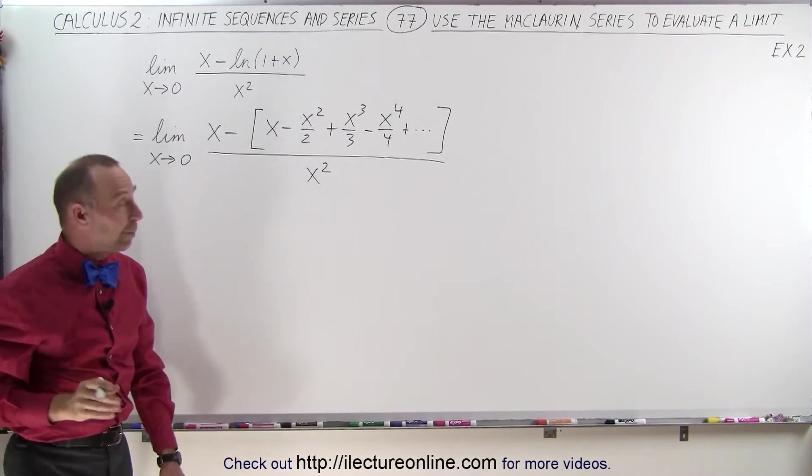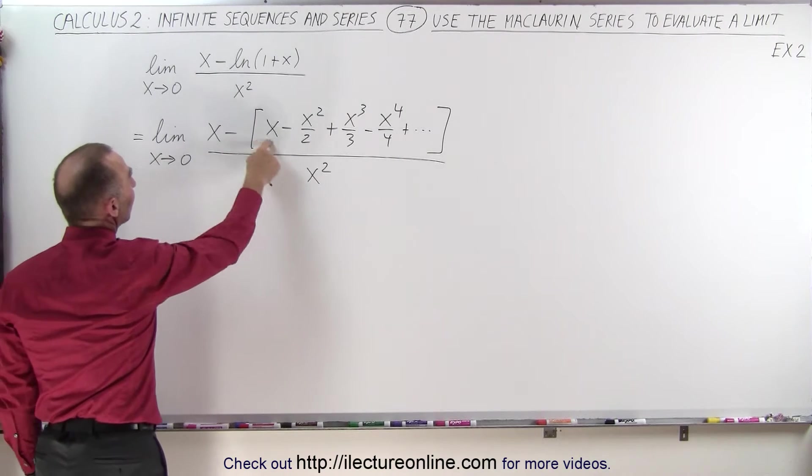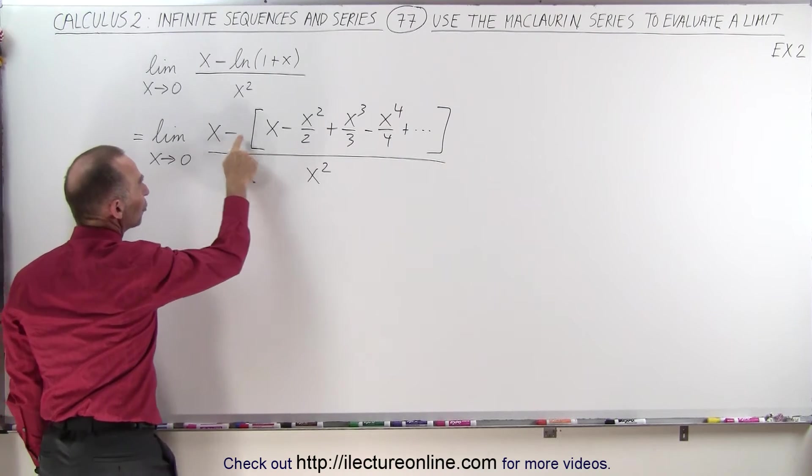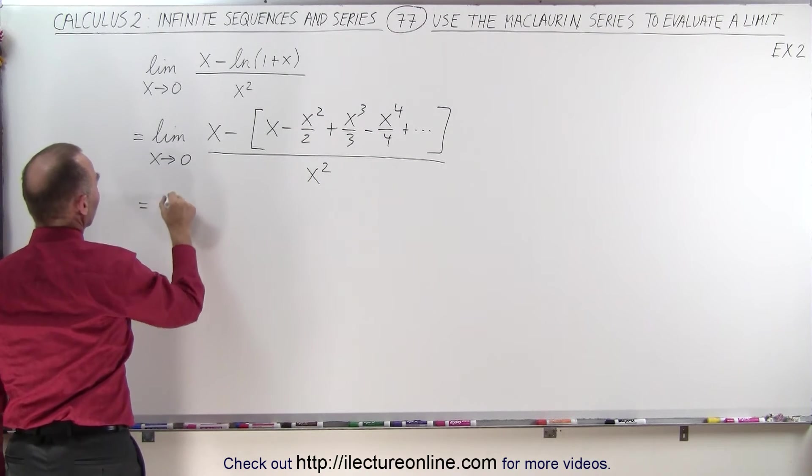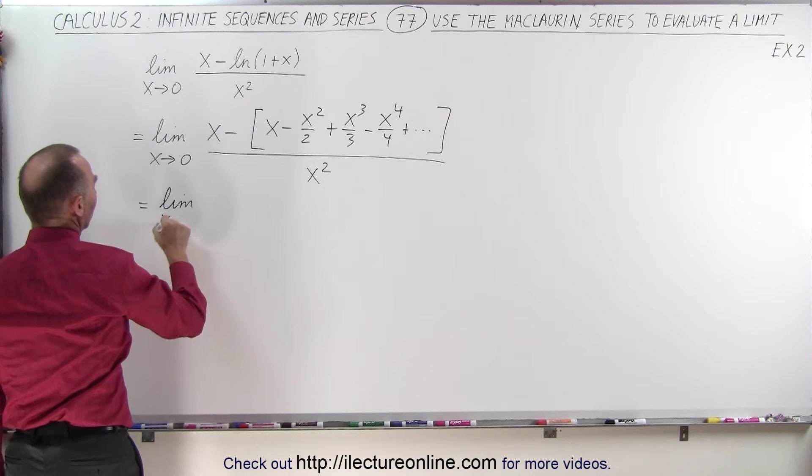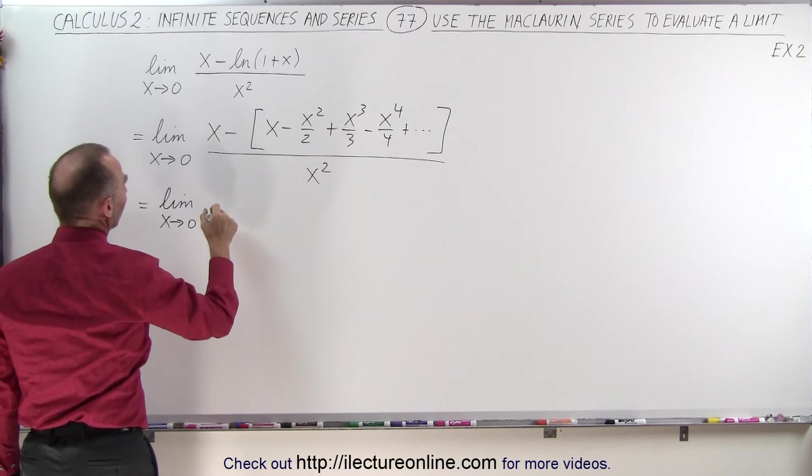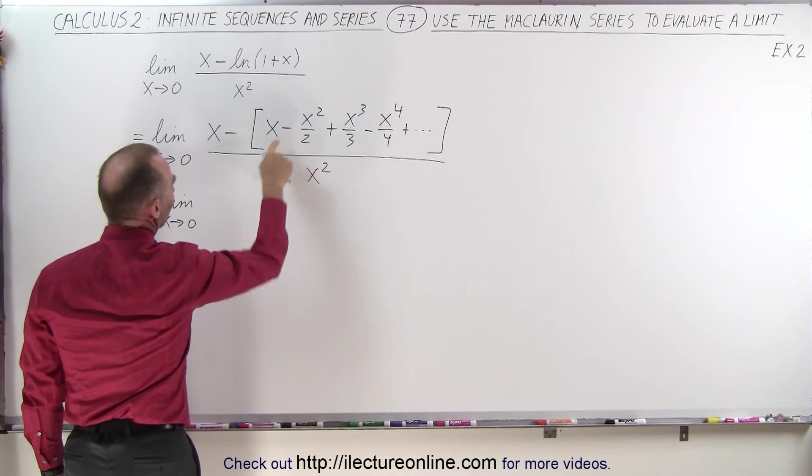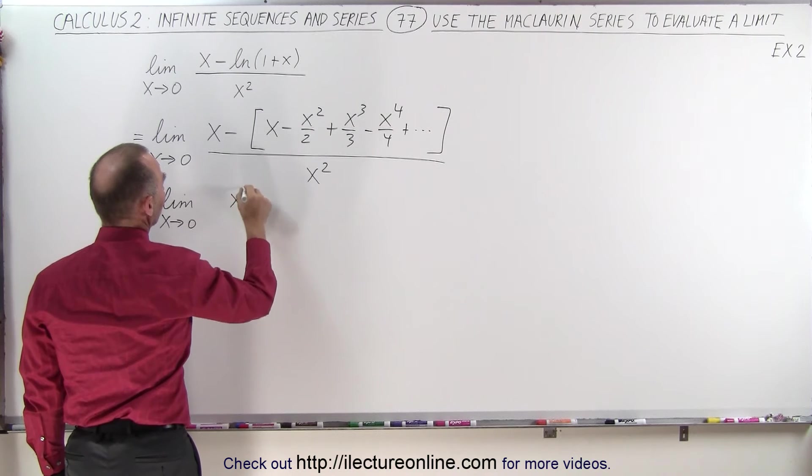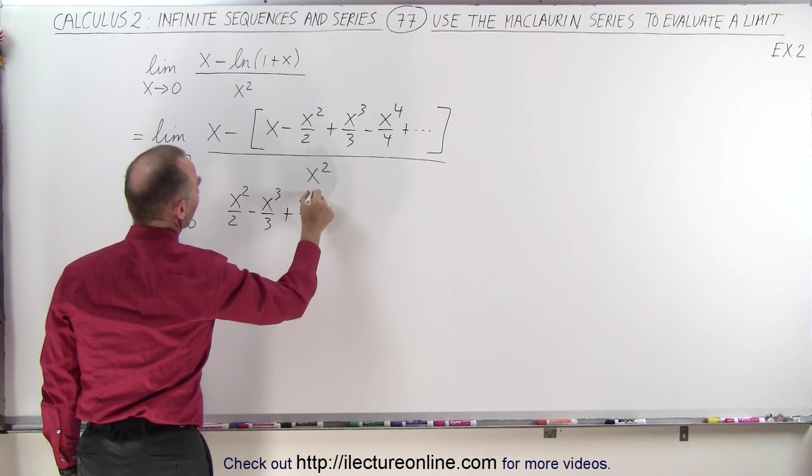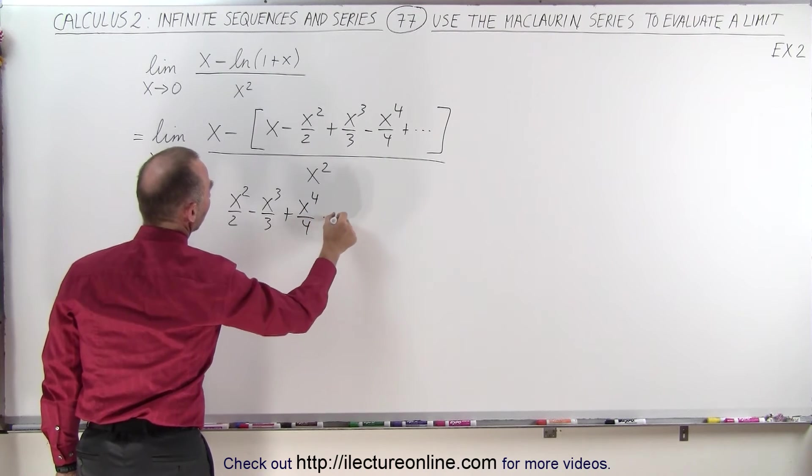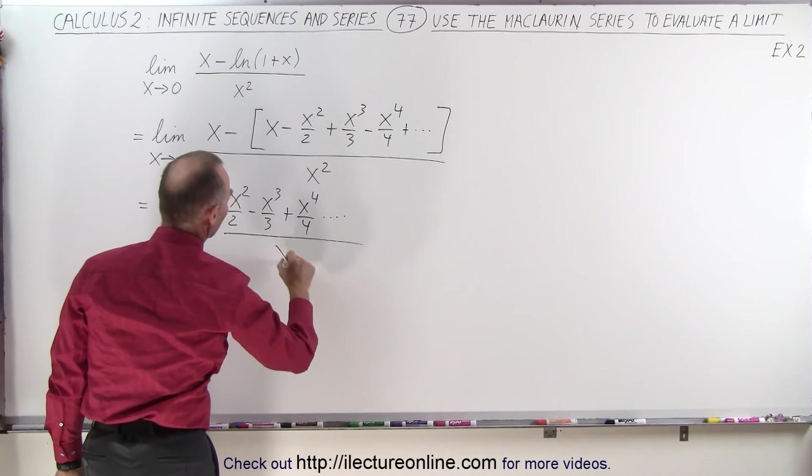Now this can be simplified because we have an x minus x, so these two cancel each other out, and this negative will change the sign of every term in the series. So this can now be written as the limit as x goes to 0 of minus times a minus becomes plus x squared over 2 minus x cubed over 3 plus x to the 4th over 4 and so forth, all divided by x squared.